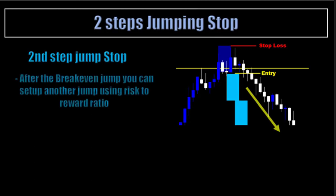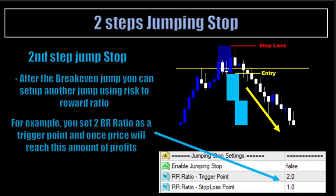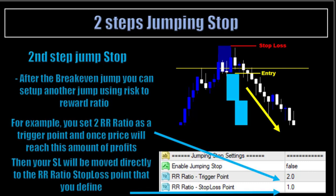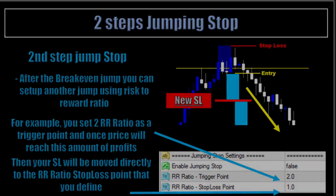Second step, jump stop. After the break-even jump, you can set up another jump using risk-to-reward ratio. In this example, you set 2 risk-reward ratio as a trigger point, and once price reaches this amount of profit, your stop-loss will be moved directly to the risk-reward ratio stop-loss point that you defined. In this example, we set the trigger at 2 and the stop-loss point at 1, so the stop-loss will appear at 1 reward once price reached 2 rewards.